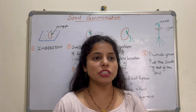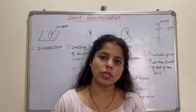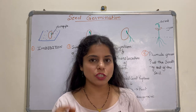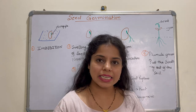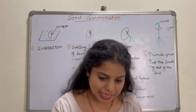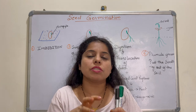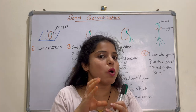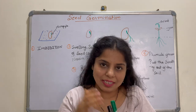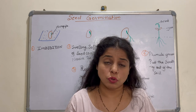Seed germination — if we talk about the life of a plant, it starts from a tiny seed. And that tiny seed internally consists of a small embryo. So let's start the journey: how does seed germination happen?